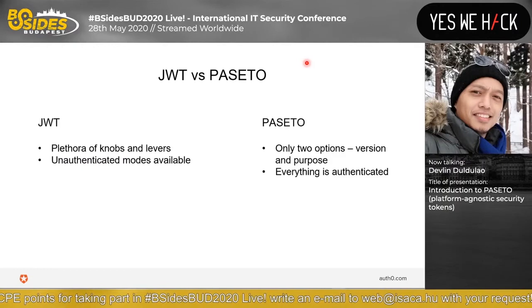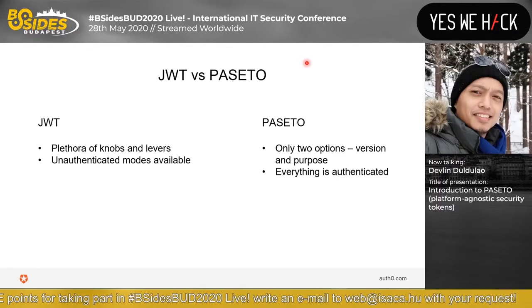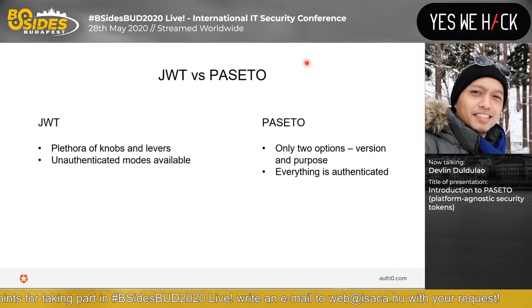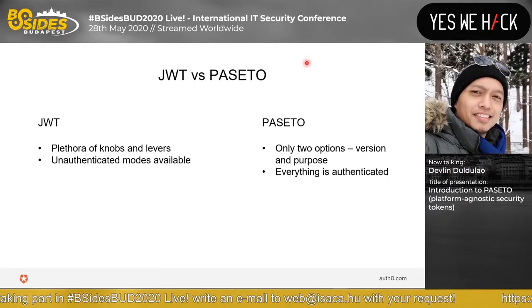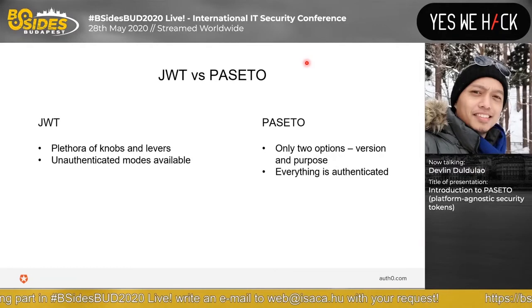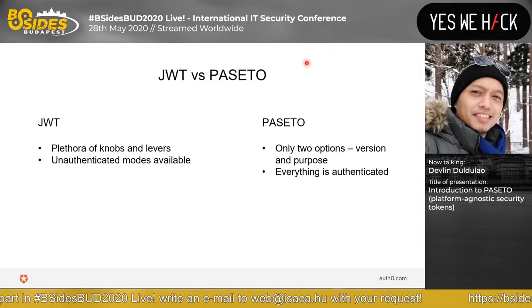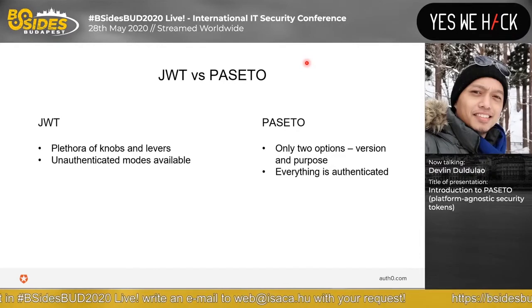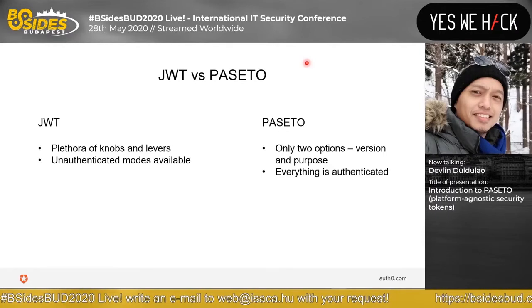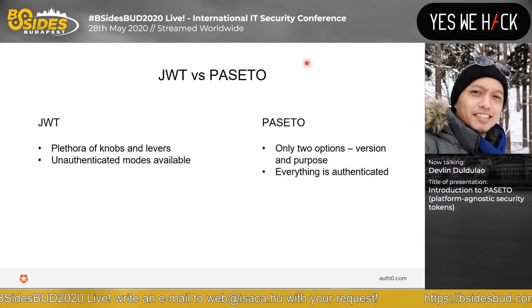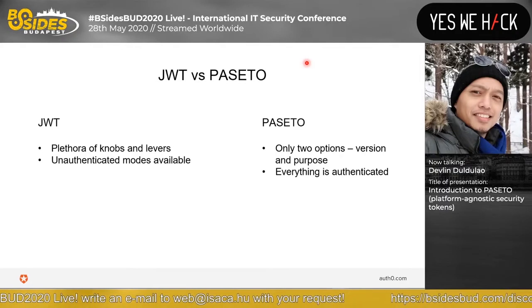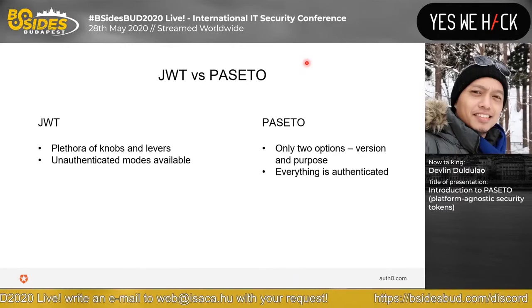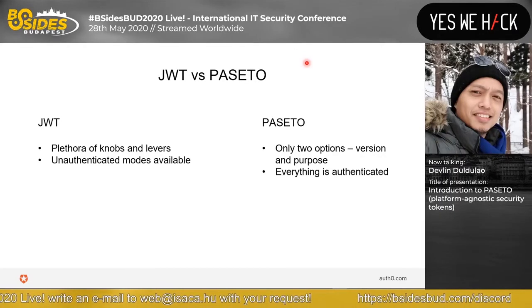JWT versus PASETO: JWT has a plethora of knobs and levers and unauthenticated modes available — JSON Web Tokens has a lot of options, including often unauthenticated options. Whereas PASETO gives you two options — version and purpose — and everything is authenticated. Local tokens are always encrypted, so you don't actually leak sensitive information for a local system.